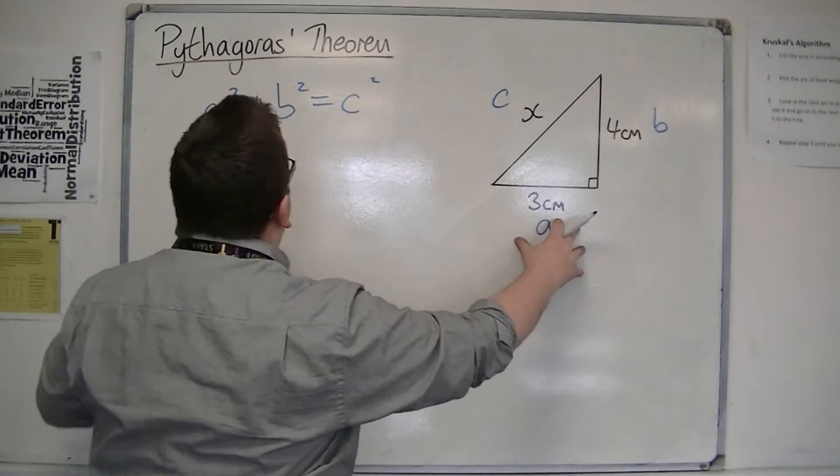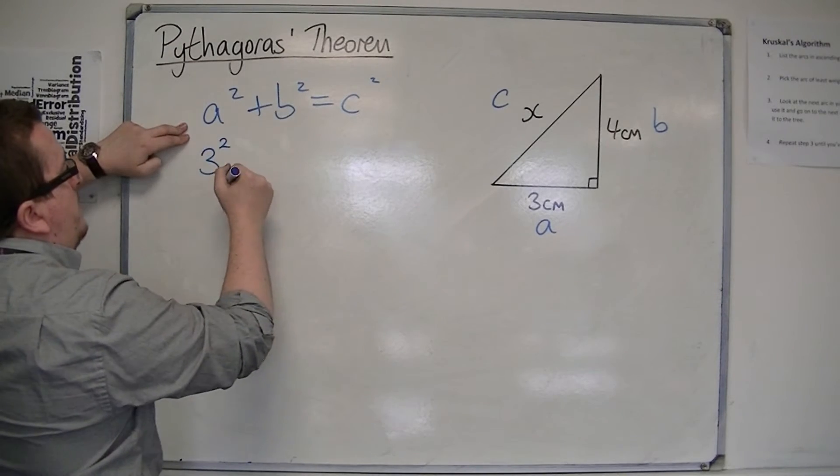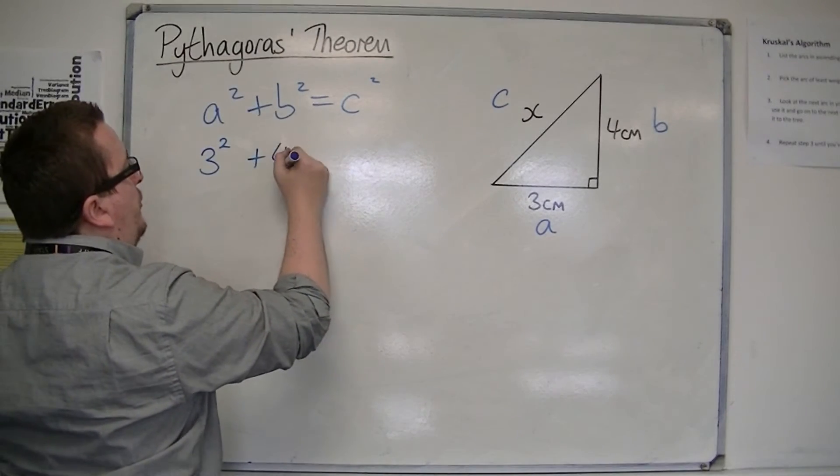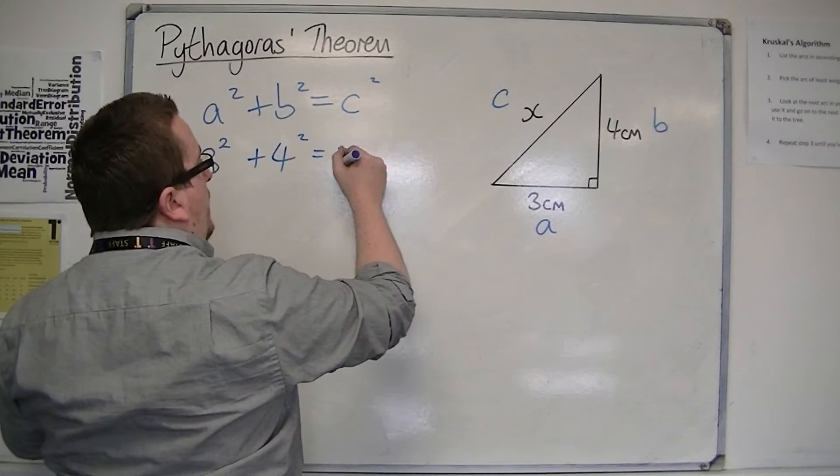So, I've got A, which is 3, so I've got A squared, so that's 3 squared. I've got B, which is 4, so 4 squared is C squared, which is X, so X squared.